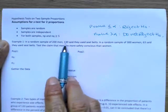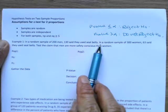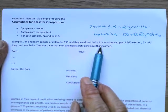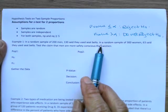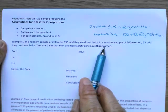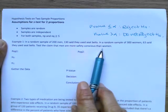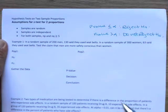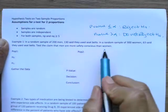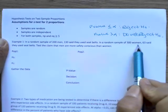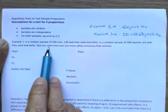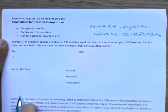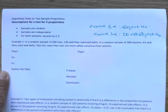In a random sample of 200 men, 130 said they used seatbelts. This is an old example - I think almost everybody wears seatbelts now. It's so funny to watch the progression of questions, even about how many people had cell phones. In a random sample of 300 women, 63 said they used seatbelts. Test the claim that men are more safety conscious than women. I'm going to have to pay attention when I go to write that alternative hypothesis.